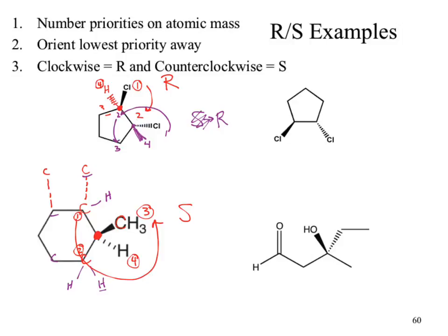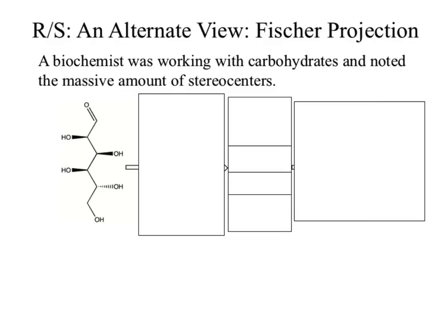A useful ballpark: lower hybridization carries higher priority — not always true, but pretty close. The sp2 carbon ranked higher than the sp3 carbon in our example. Fisher projections: when a molecule has four stereocenters, going through R/S for each one is tedious. Biochemists invented a shortcut — the Fisher projection.